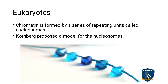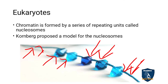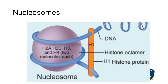In eukaryotes, we will see chromatin. The chromatin has repeated subunits called nucleosomes. When photographed through an electron microscope, you can see a string with beads — the string is the chromatin and the beads are the nucleosomes. Kornberg proposed the model for nucleosomes. The nucleosome structure contains histone proteins, and the term 'nucleosome' was coined by Oudet.